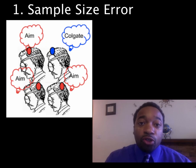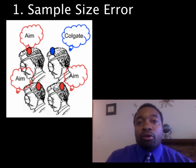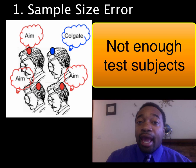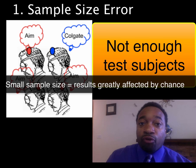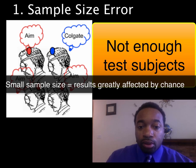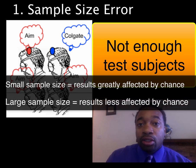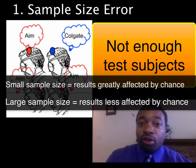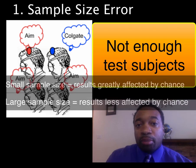This brings us to our first experimental error: sample size error. Sample size error is when too few test subjects are in an experiment. When the sample size is too small, the results can be explained by chance or pure coincidence — just like finding those three dentists that preferred AIM out of four. In order to improve the experiment, we have to increase our sample size, which makes it less likely that our results can be explained by pure chance, just like finding 3,000 out of 4,000 dentists.